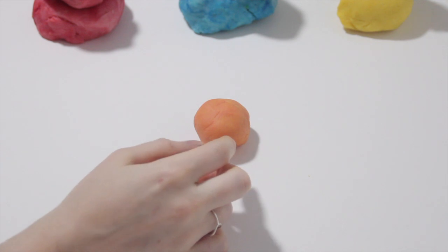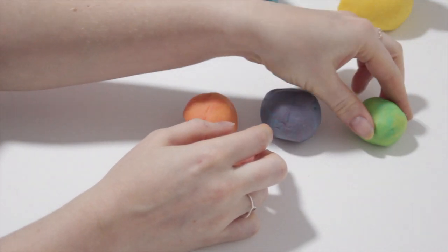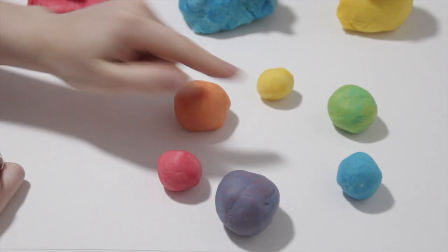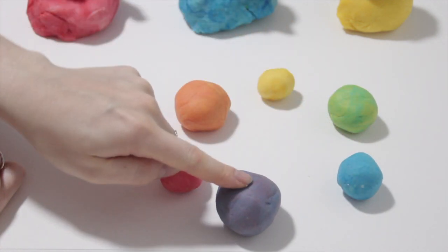So our secondary colors that we have created are orange, purple and green. We can now see that yellow and red mix to make orange, yellow and blue make green, and blue and red make purple.